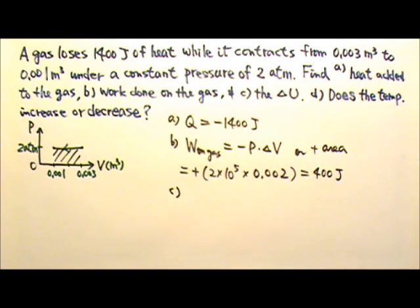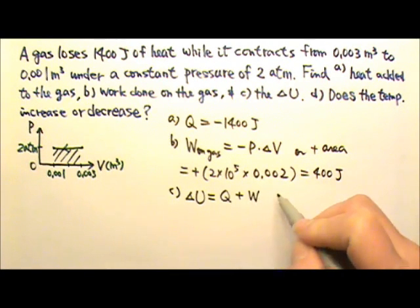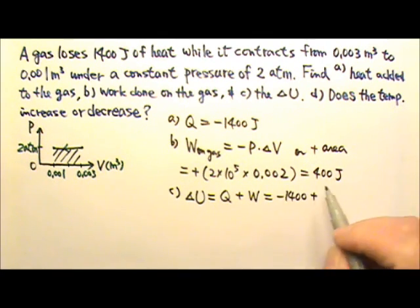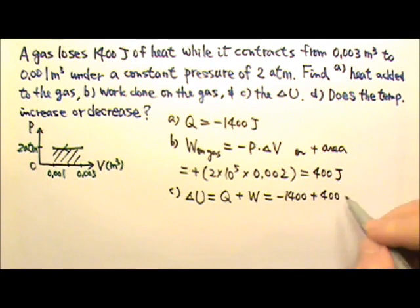Part C, the change in internal energy. And according to the first law, it is the Q plus W. We have the Q, negative 1,400 plus the W, positive 400. So the delta U would be negative 1,000 joules.